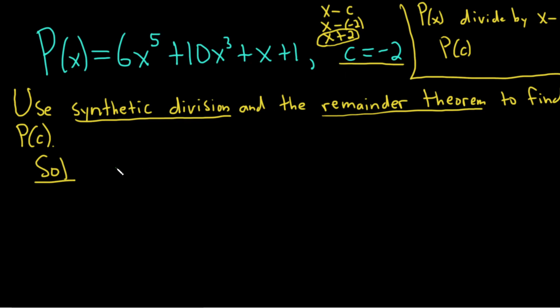So we'll start by writing the negative 2 here, and then I like to draw a little box like this. And then you write the coefficients of your polynomial here. So if there's any missing, you have to use placeholders. And that's why I picked this example, because this one has things missing.